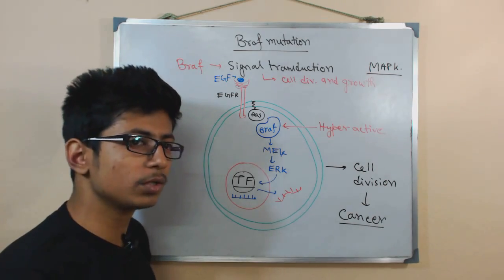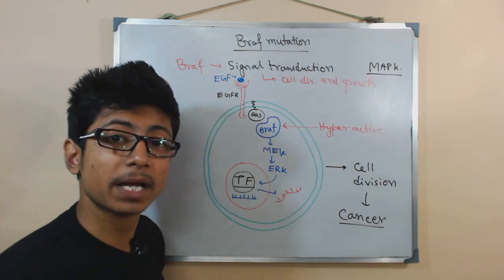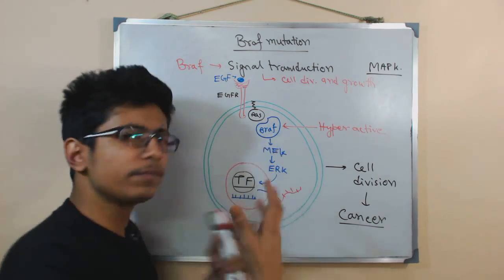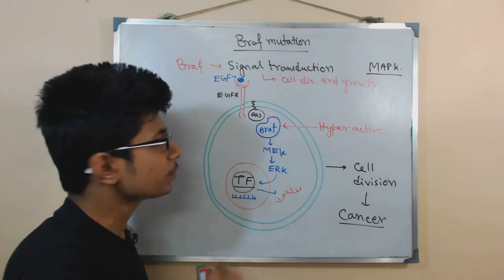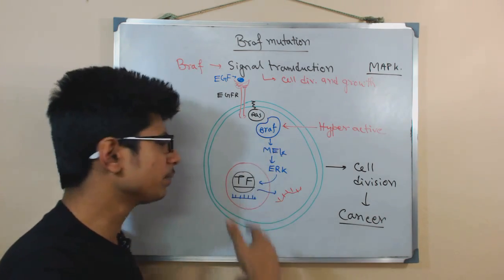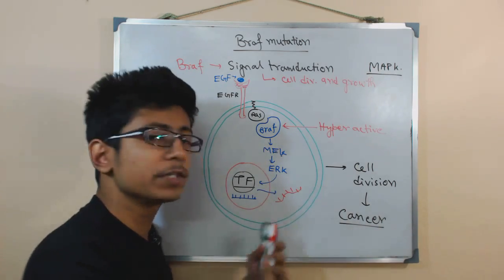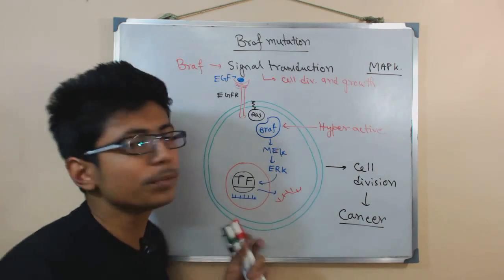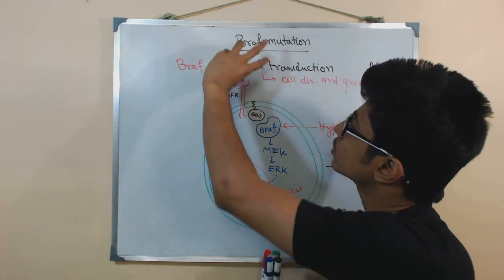This is the whole system of BRAF, and this pathway is called the MAP kinase pathway. Any mutation in BRAF, or in RAS as we have already seen with KRAS mutation, creates faulty proteins in excess amounts responsible for cell division, and finally turns it into a cancer cell. This is how the whole BRAF mutation works.